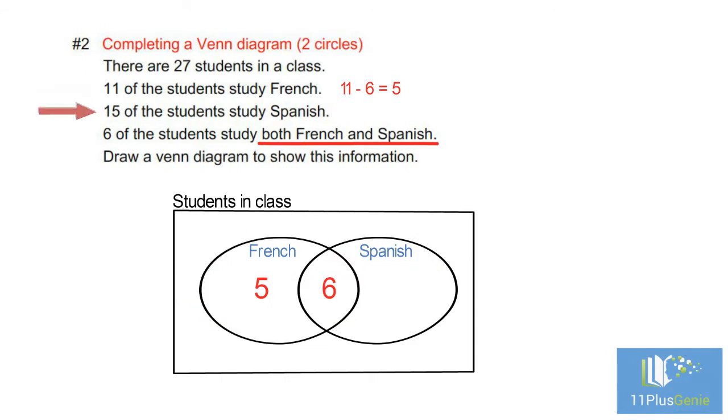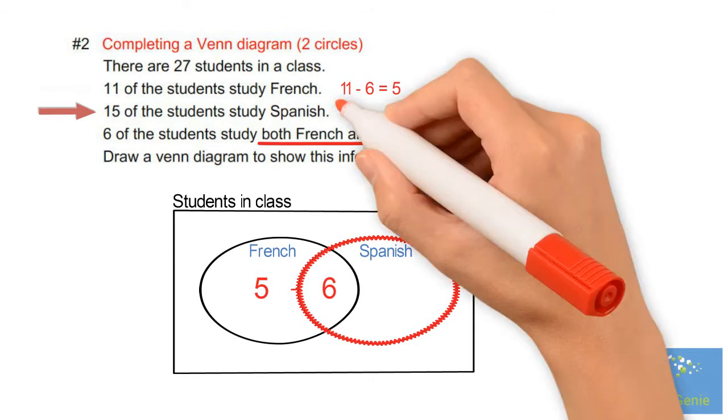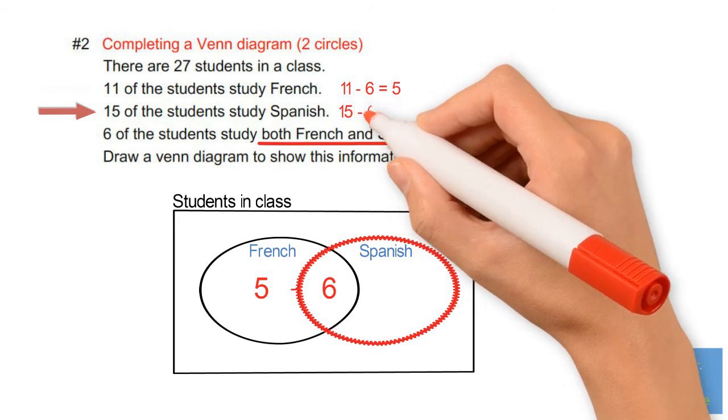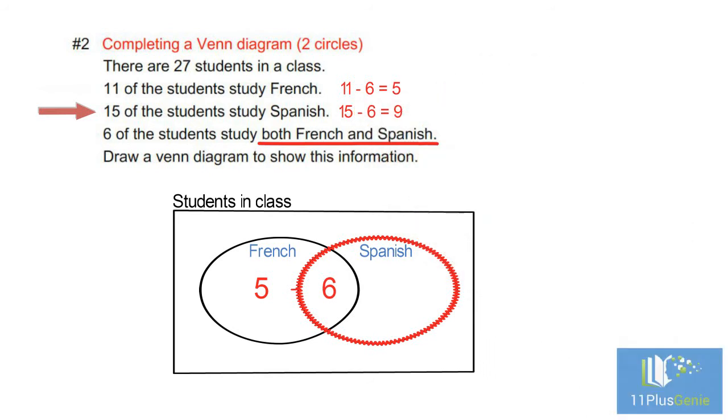15 students study Spanish. In the Spanish circle there must be a total of 15. 6 of these 15 students are already in the Spanish circle. We need 15 take away 6 which equals 9, 9 students who study only Spanish.